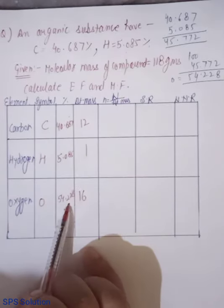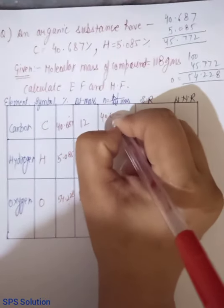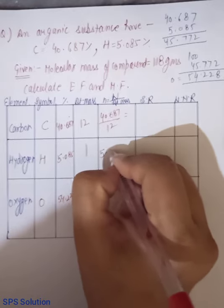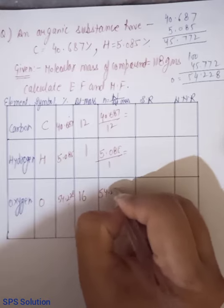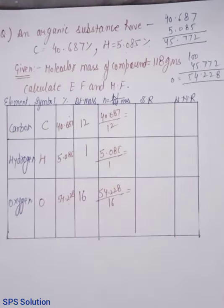Again kya karna hai? This column divided by this column. Okay, so it is 40.687% by 12. It is 5.085% by 1 and it is 54.228% by 16. Okay, to this much portion is almost clear to you.